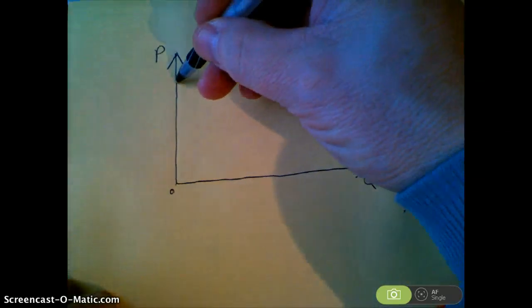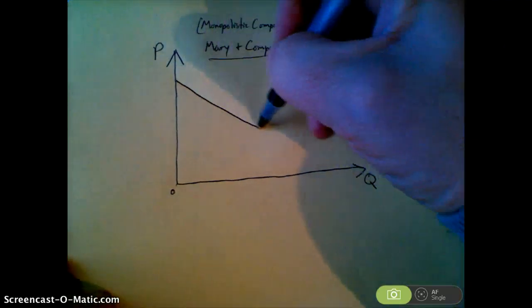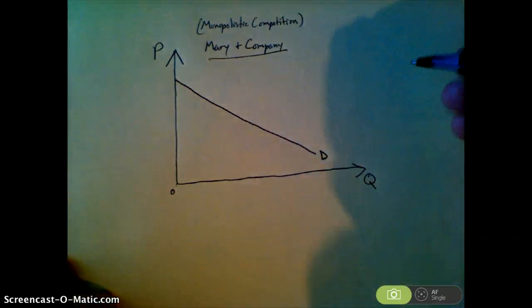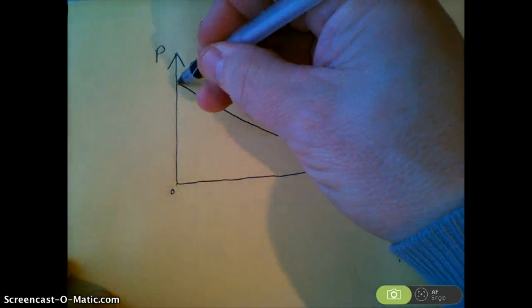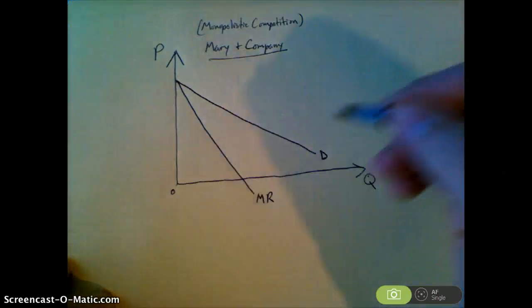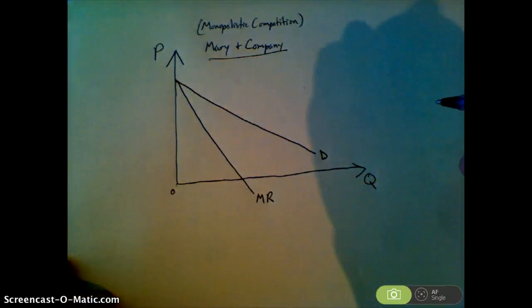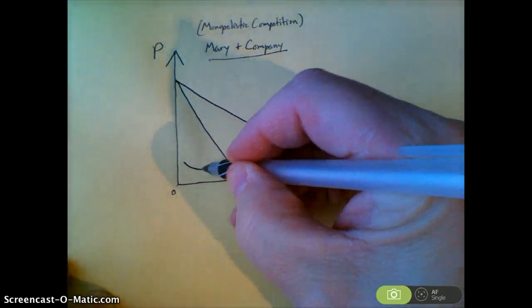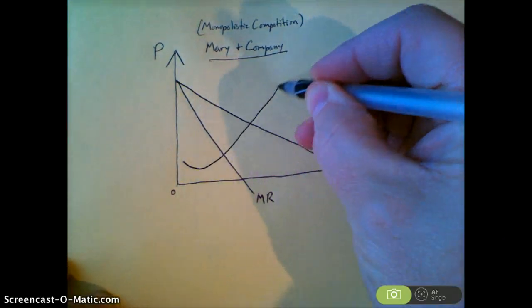So let me start by drawing a relatively elastic demand curve for Mary and Company, and then a marginal revenue curve for Mary and Company, and then I like to draw in the marginal cost curve.